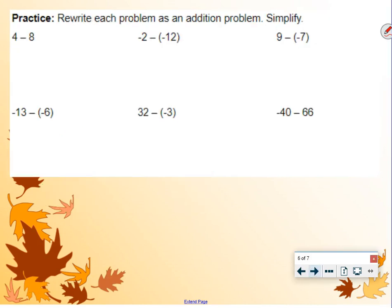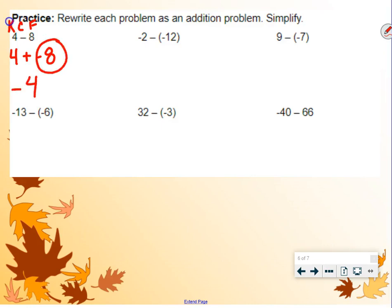More examples of this. 4 minus 8. Keep, change, flip. Keep the 4, change subtraction to addition, flip positive 8 to negative 8. Signs are different, so we subtract the numbers. We do 8 minus 4 is 4. Keep the sign of the larger, which is negative, so it's negative 4.